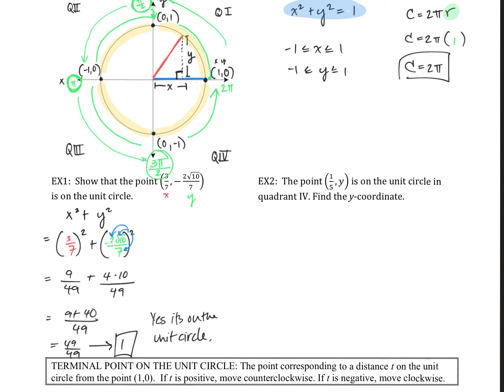Now let's take a look at a slight variation. For example 2, the point (1/5, y) is on the unit circle in quadrant 4. Find the y coordinate. For the unit circle, we know that x² + y² = 1, and we are trying to find y. We are given x, which means if we plug that in for x, we can manipulate the equation and solve for y.